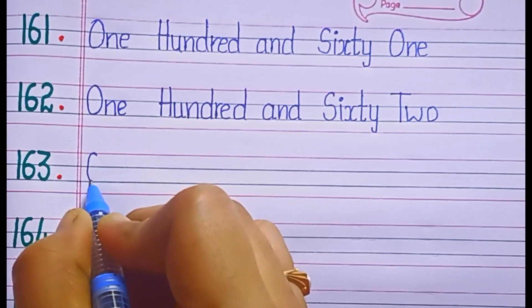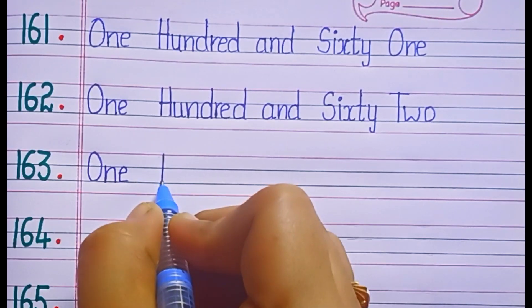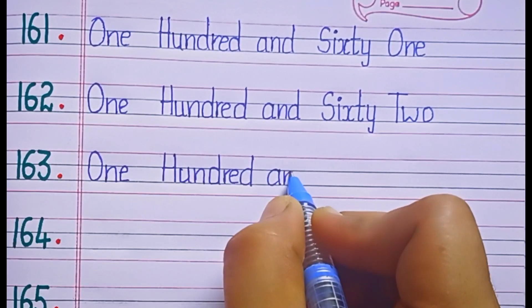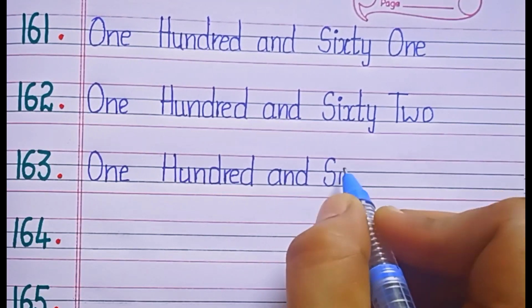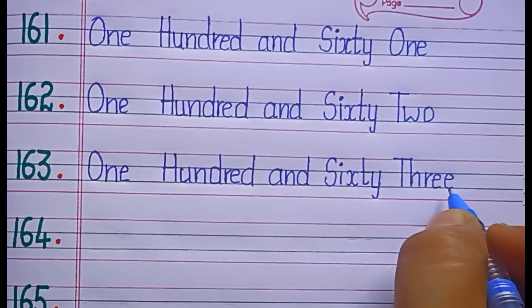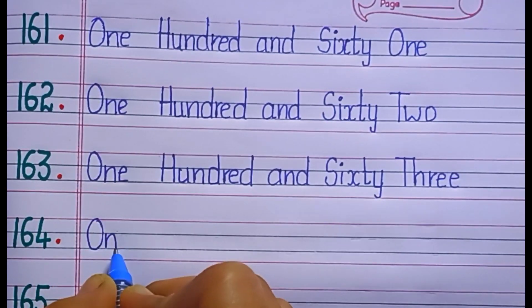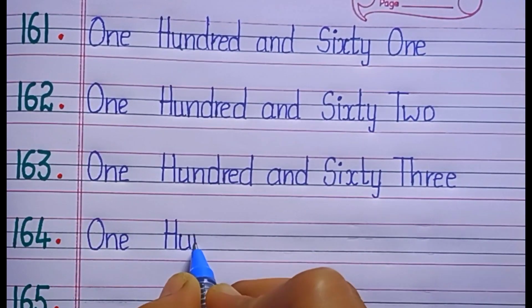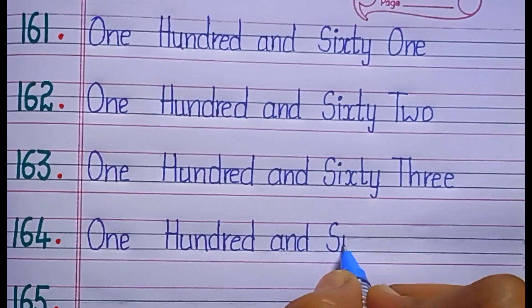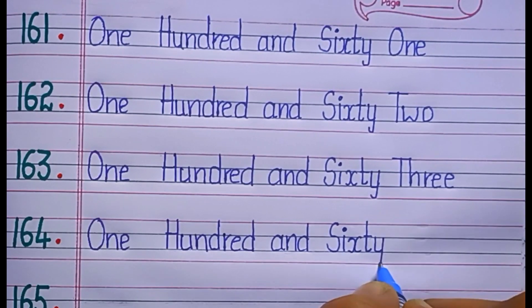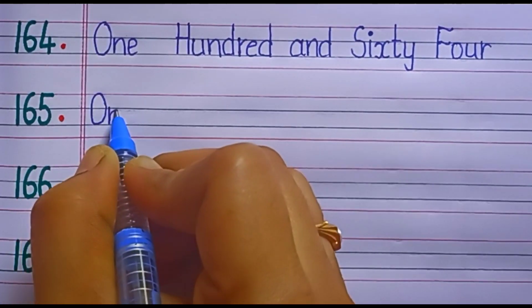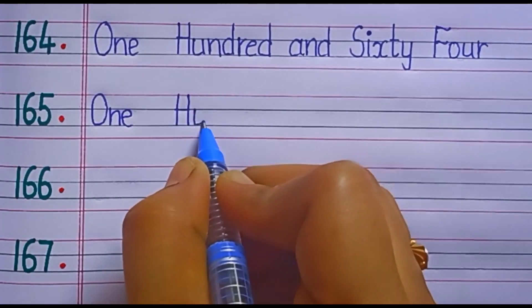One hundred and sixty-three. S-I-X-T-Y, sixty. T-H-R-E-E, three. Sixty-three. One hundred and sixty-four. One hundred and sixty-five.